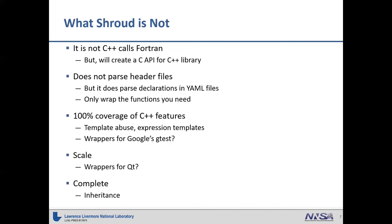What Shroud is not: it is not C++ calling Fortran — that's a different task. It will create a C API for a C++ library, which is useful since Fortran only has bind(C) and does not have bind(C++). It does not parse header files — that's a very big job parsing C++. But it does parse declarations in the input YAML file. You can cut and paste from your header files, and this allows you to start small and just wrap the functions that you care about.